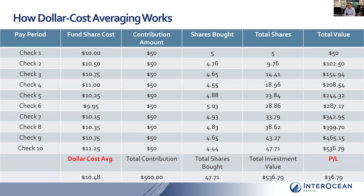The value in doing it this way is that you've made $36.79 by saving $50 per pay period in this fashion, which is wonderful. It shows that with variability, dollar cost averaging works. But the question is, does it work every time?